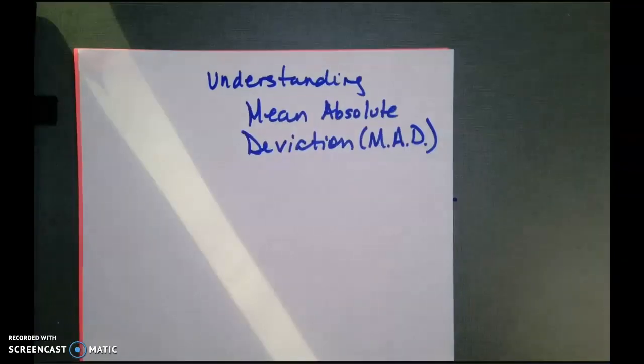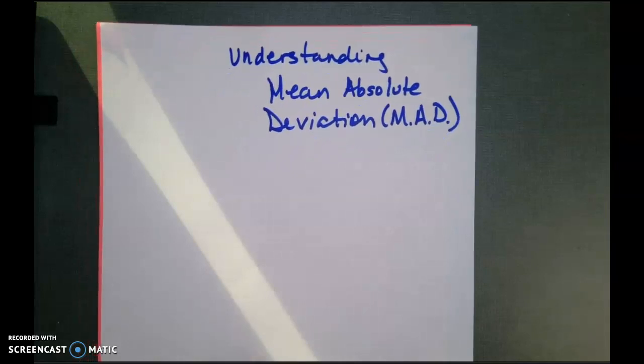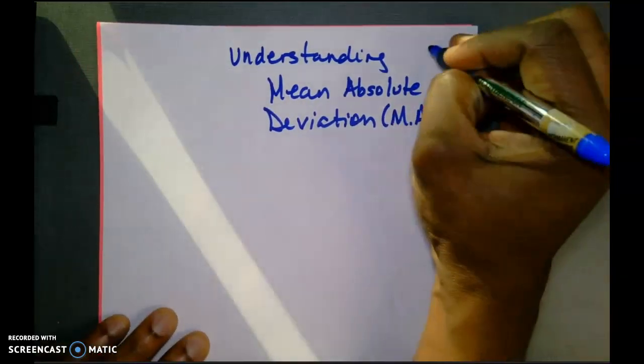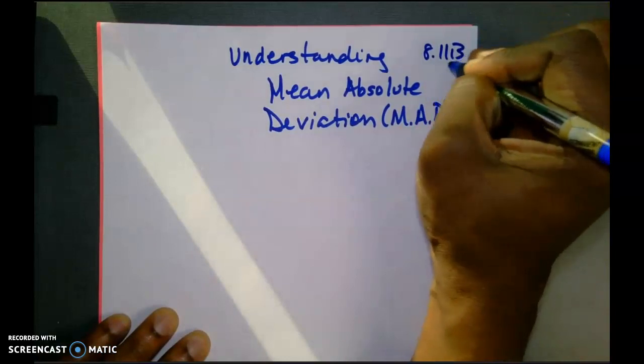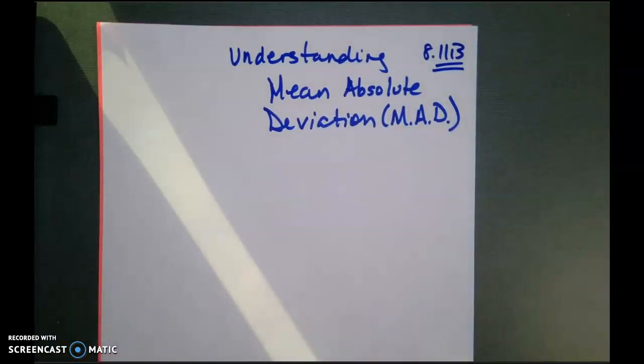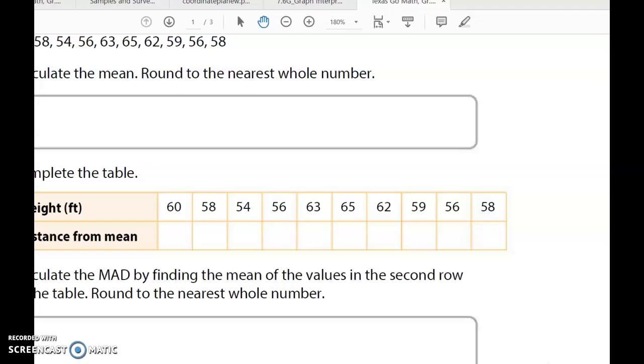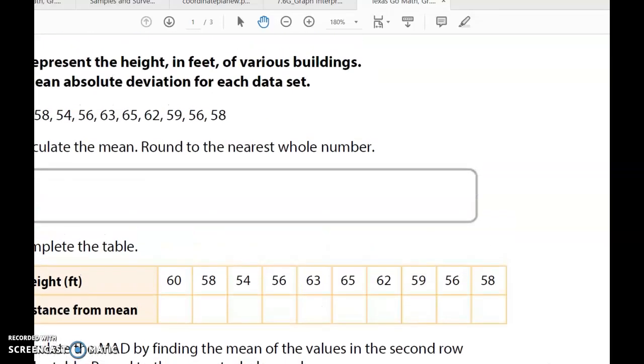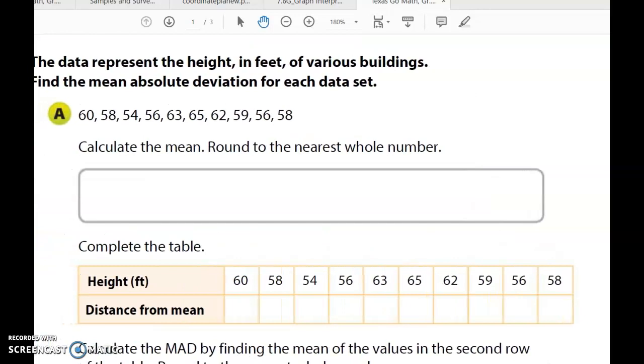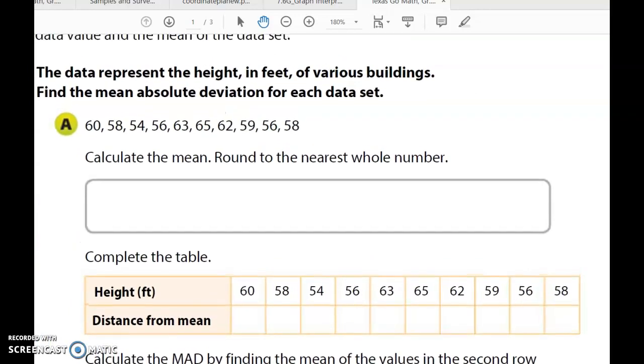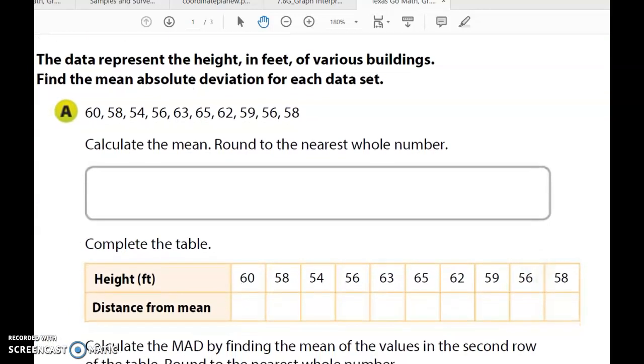Now that I've switched back over to my viewer, 8.11b is what I'm going to write here for my TEKS. Now we're going to look at an example that deals with a set of data. So, I'm going to go ahead and switch over also to what we have here in terms of our data. We have the data represents the height and feet of various buildings. Find the mean absolute deviation for each data set.